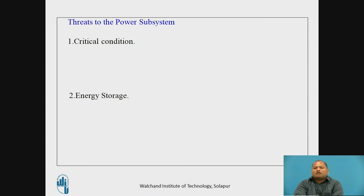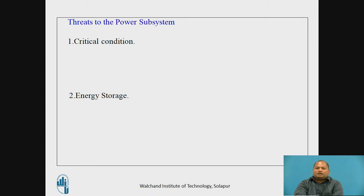Now let us see what threats exist to the power subsystem. Since we cannot predict the conditions of space, there may be heavy solar wind that can disturb the solar panels. Also, meteoroids present in space can damage the solar panels. In a critical condition, satellites orbiting the earth pass through a shadow region on the opposite side of the earth from the sun. In that shadow, solar panels cannot produce electric energy, and the satellite would be unable to operate and would freeze to incredibly low temperatures — eventually around minus 270 degrees Celsius.